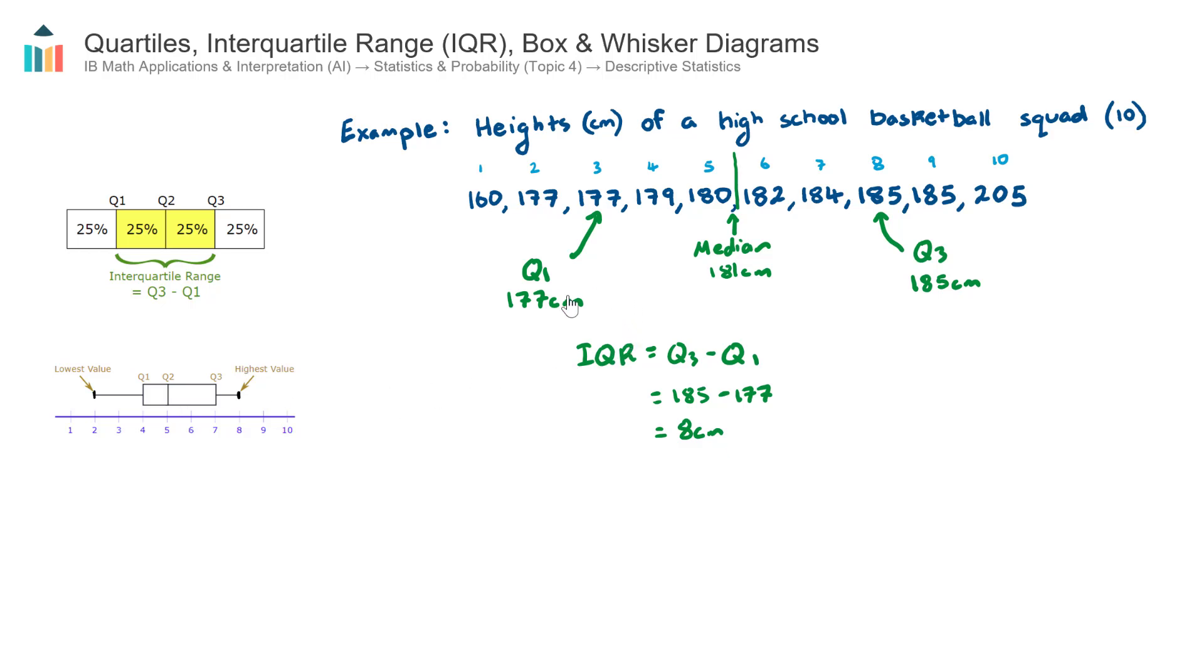So I'll just quickly go ahead now and draw it for this particular basketball squad. I won't be too accurate with an axis, I'll just sort of draw it by freehand. So I have my minimum value here of 160. There was a bit of a gap to my lower quartile, 177. From the lower quartile to the median was a pretty small gap, that's 181. And then again, pretty small gap to my upper quartile, 185. And then quite a large gap to my maximum, 205. Once I have those five vertical lines, I just create a box and whisker diagram. It looks like this.